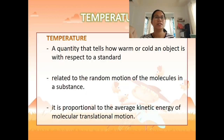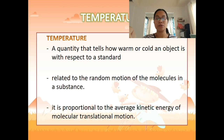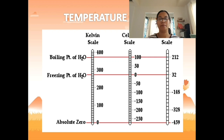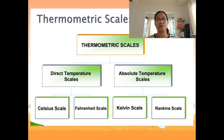What is temperature? Temperature is a quantity that tells how hot, warm, or cold an object is with respect to a standard. It is also related to the random motion of the molecules in a substance, and it is proportional to the average kinetic energy of molecular translational motion — that is, the linear movement of molecules. Temperature is related to the translational motion of the molecules.